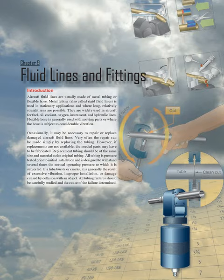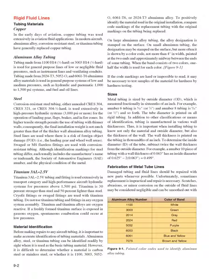If a tube bursts or cracks, it is generally the result of excessive vibration, improper installation, or damage caused by collision with an object. All tubing failures should be carefully studied and the cause of the failure determined. Rigid Fluid Lines: Tubing Materials. In the early days of aviation, copper tubing was used extensively in aviation fluid applications. In modern aircraft, aluminum alloy, corrosion-resistant steel, or titanium tubing have generally replaced copper tubing.